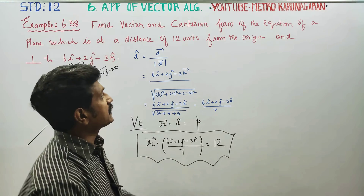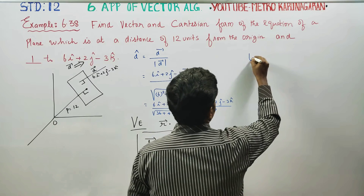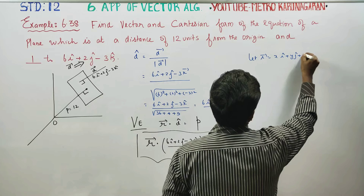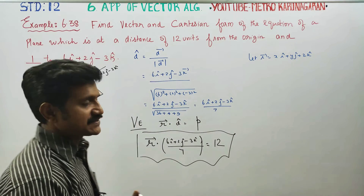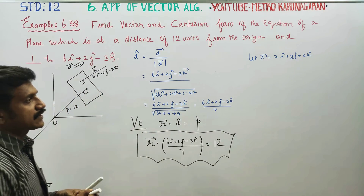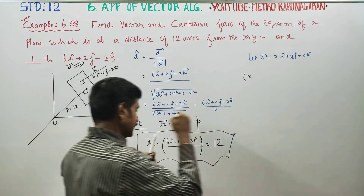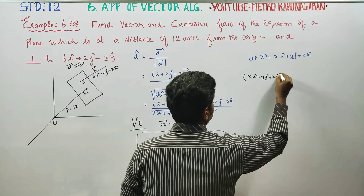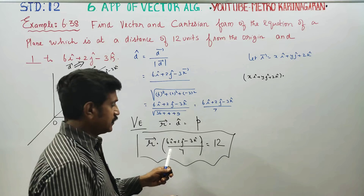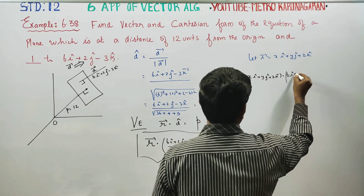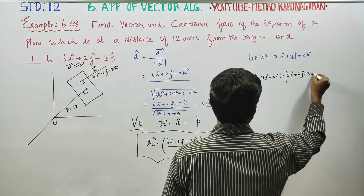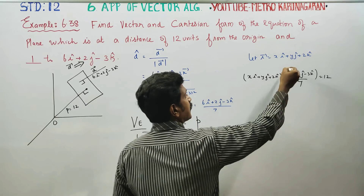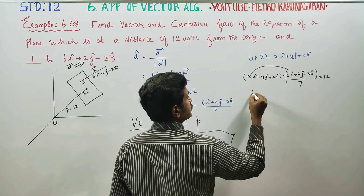After finding the vector equation, we have to find the Cartesian equation. To find the Cartesian equation, let r-vector equal xi + yj + zk. Substituting into the vector equation: (xi + yj + zk) dot (6i + 2j - 3k) / 7.